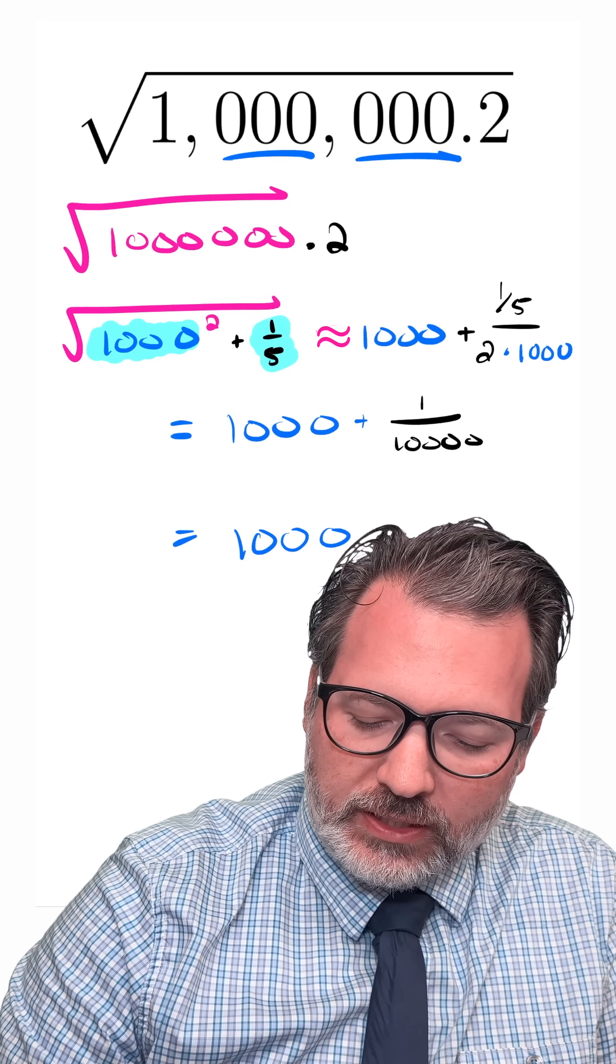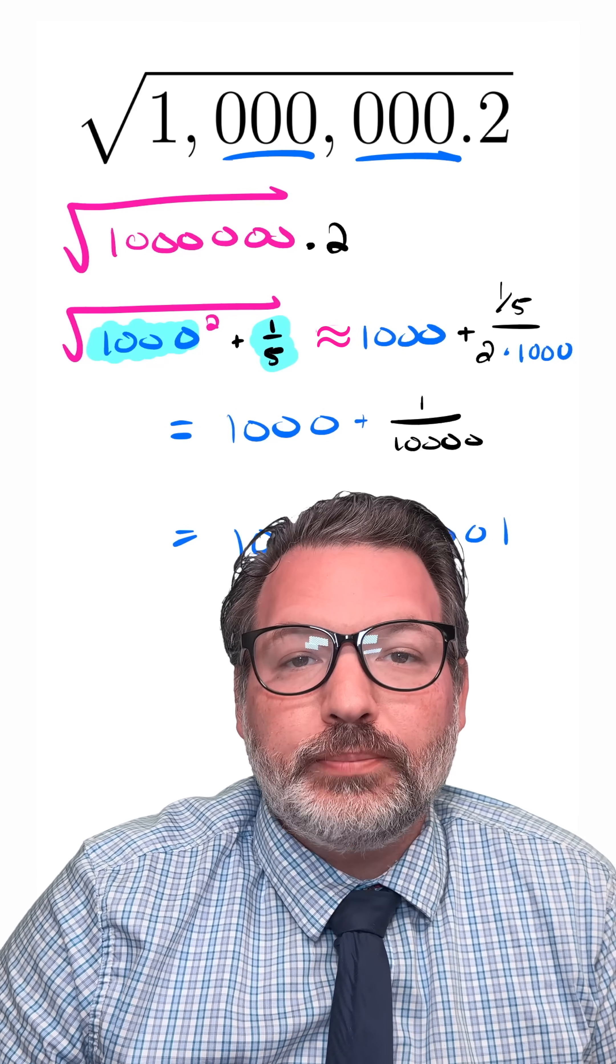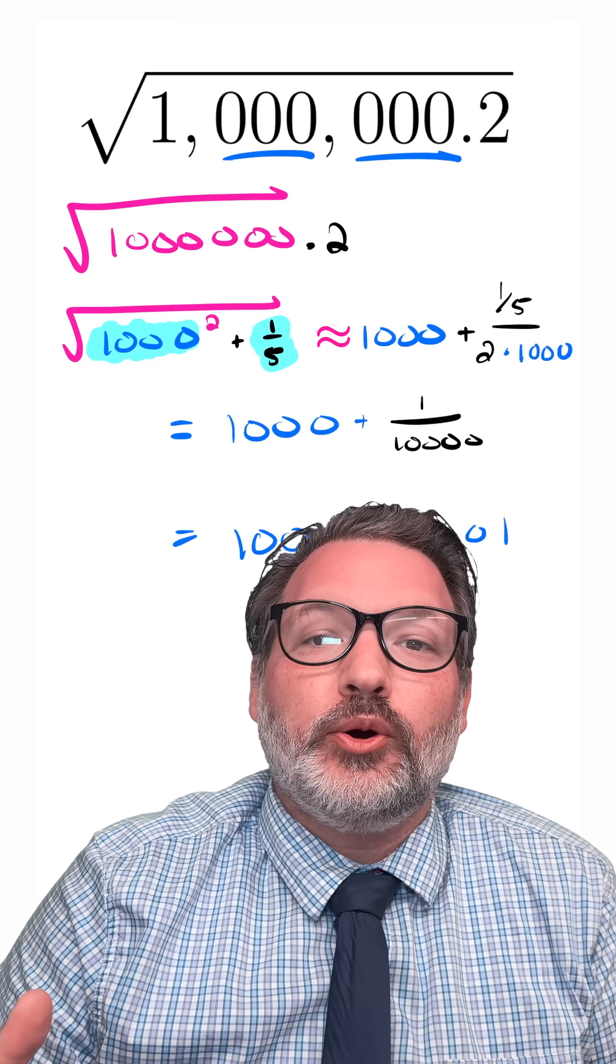And because of the nifty little way that the decimal number system works, this is the same thing as 1,000.0001.